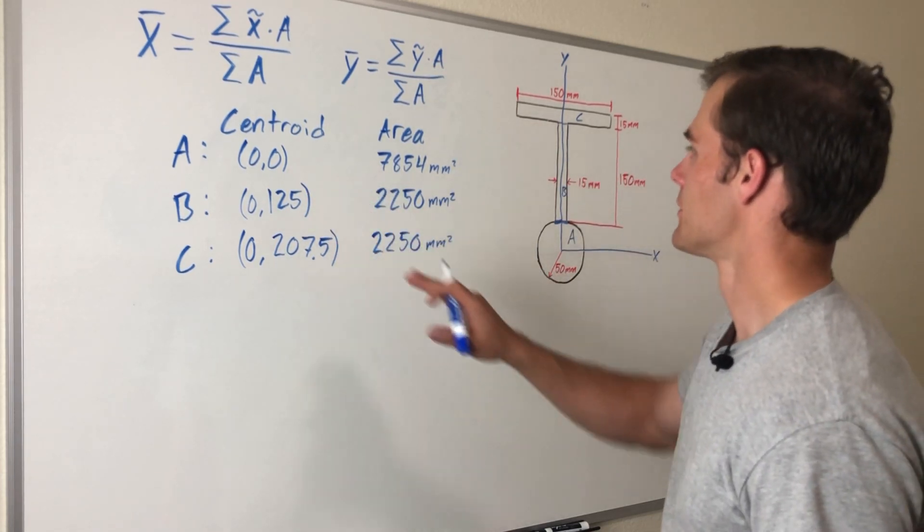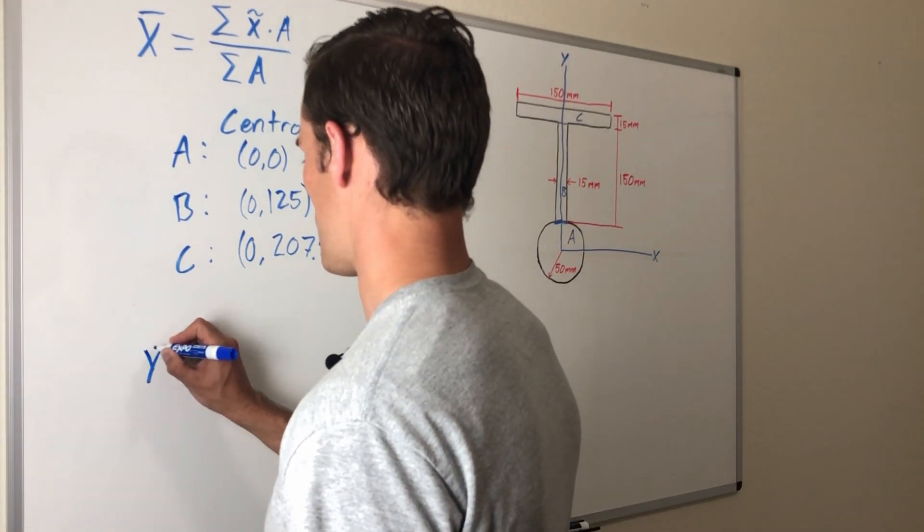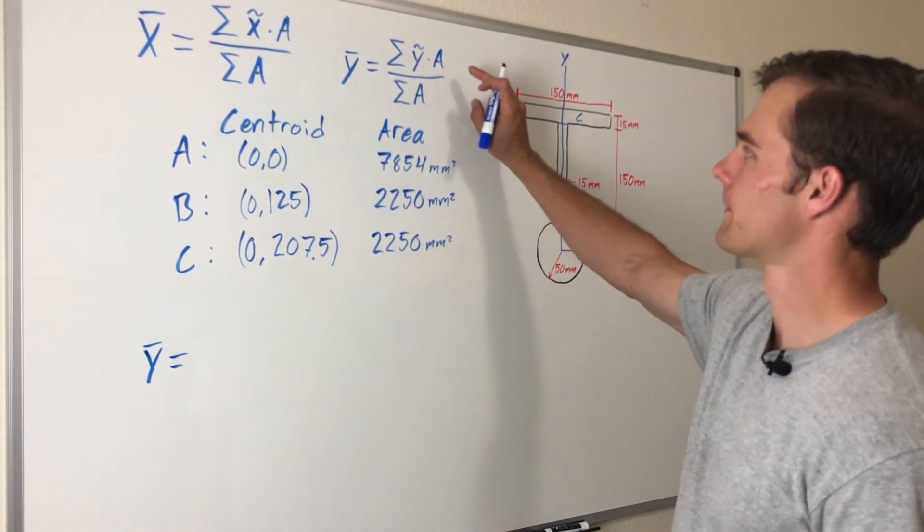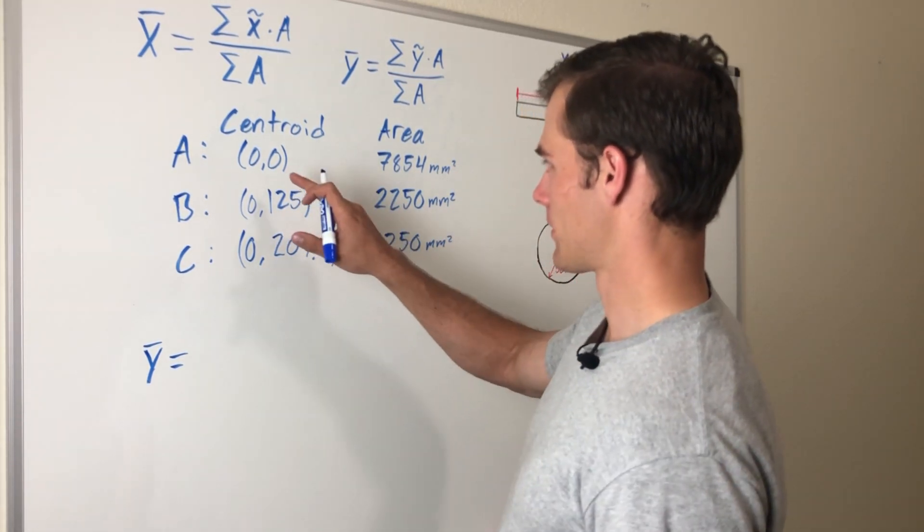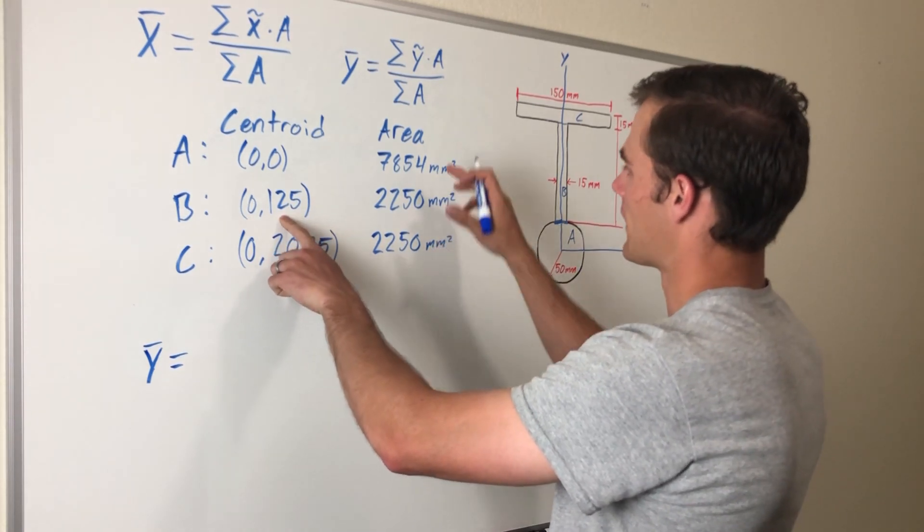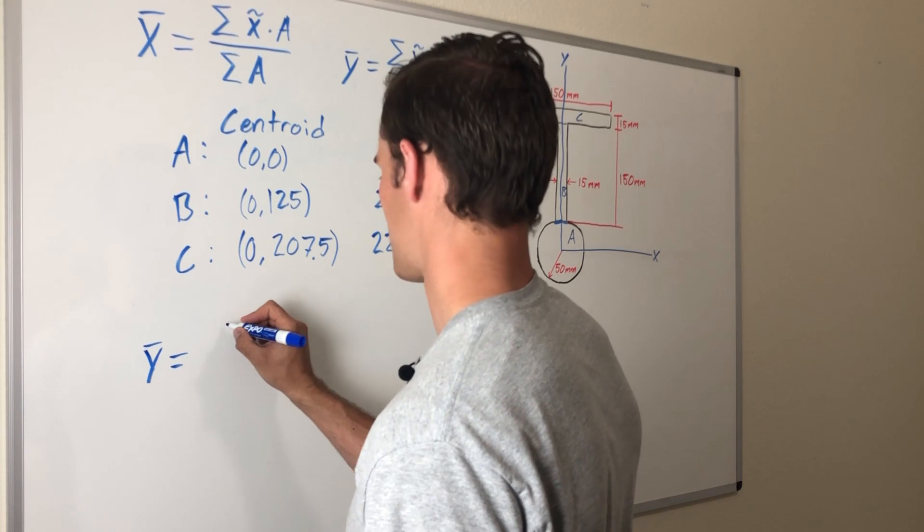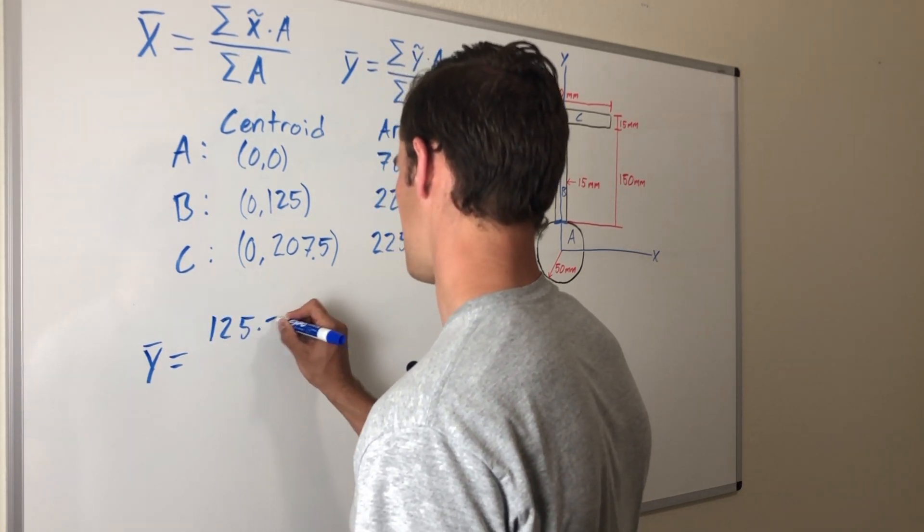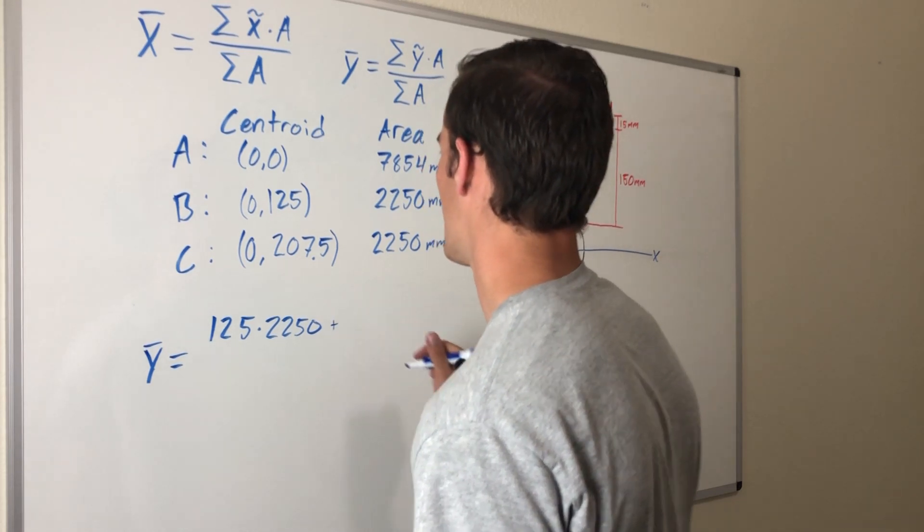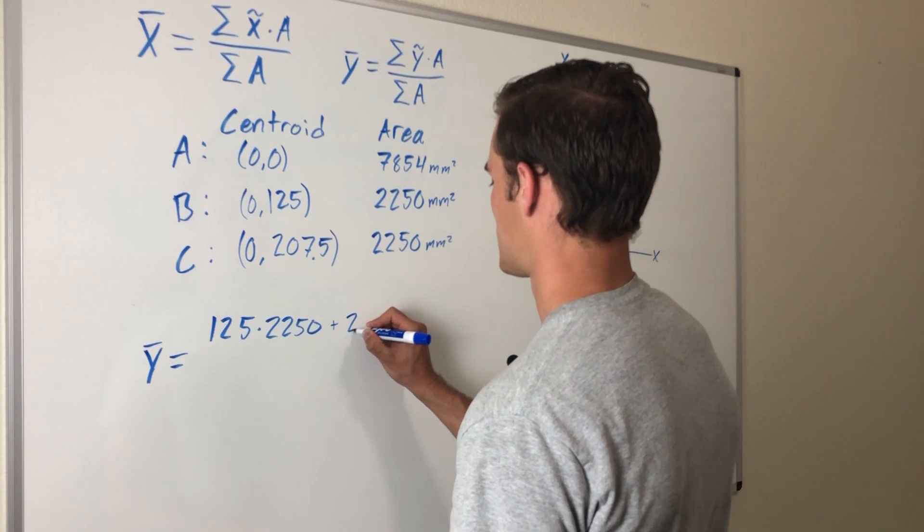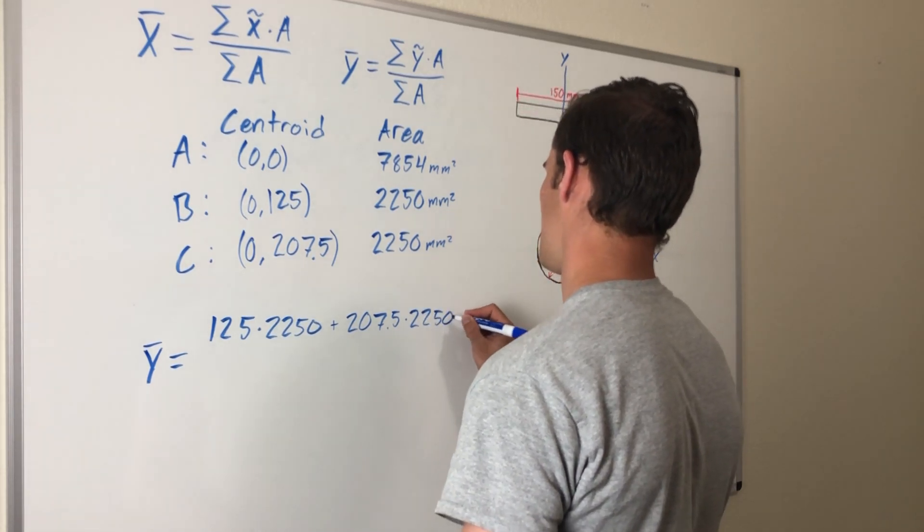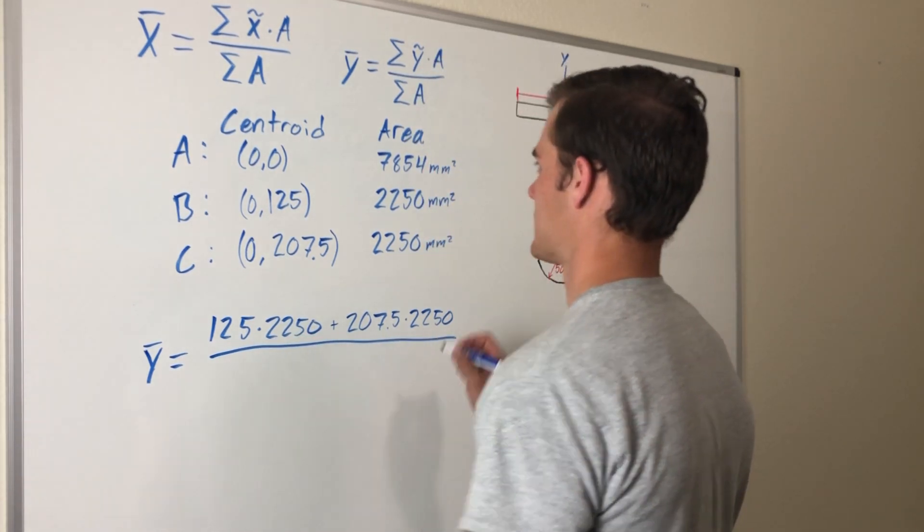To find ȳ, we set this up: ȳ equals all the y coordinates of the centroids multiplied by their respective areas. The first one is zero times 7854, not going to write that because that would just be zero. For B, it's 125 multiplied by the area 2250, so 125 times 2250, plus the y coordinate of C which is 207.5 multiplied by its area 2250. All of that divided by all the areas added up.